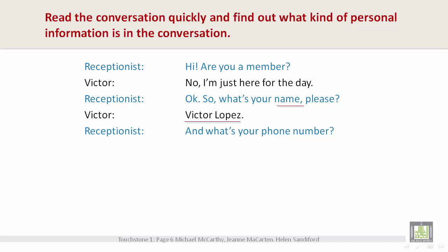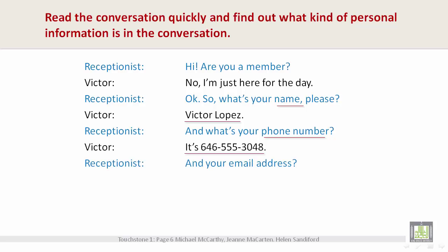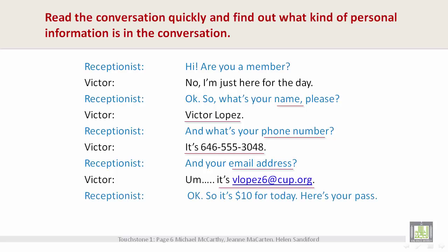Receptionist: And what's your phone number? Victor: It's 646-555-3048. Receptionist: And your email address? Victor: It's vlopez6 at cup.org. Receptionist: Okay, so it's ten dollars for today. Here's your pass. Victor: Thanks.